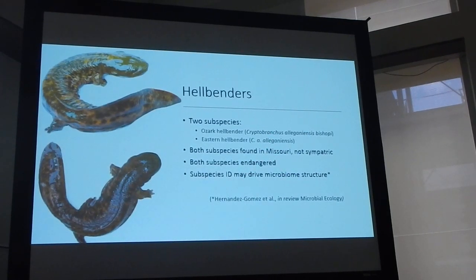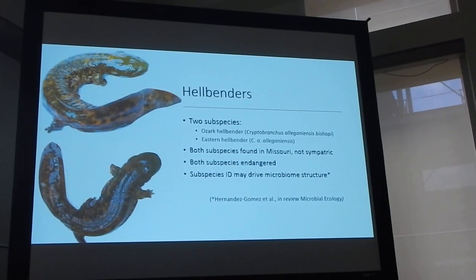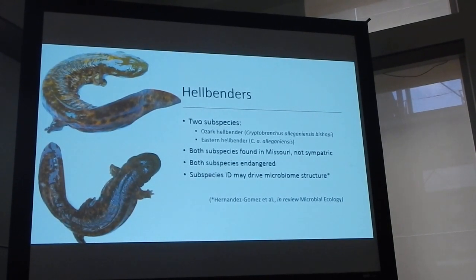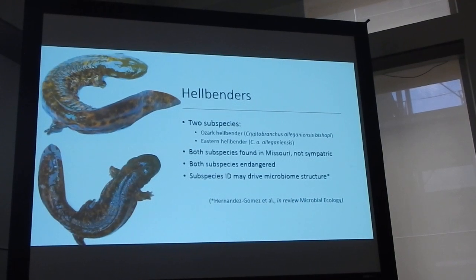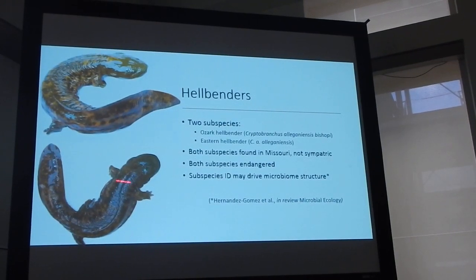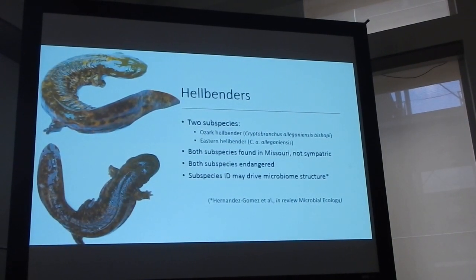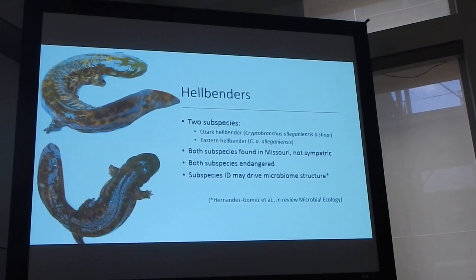So now to get to the hellbenders. I study hellbenders, which are North America's giant salamanders. There are two subspecies of hellbenders: the Ozark subspecies and the Eastern subspecies. Both subspecies are found in Missouri, and both subspecies are endangered within the state, with the Ozark hellbender being federally endangered as well.